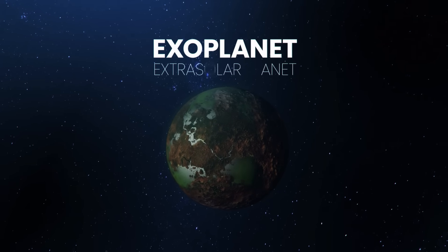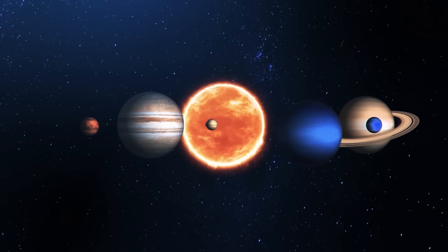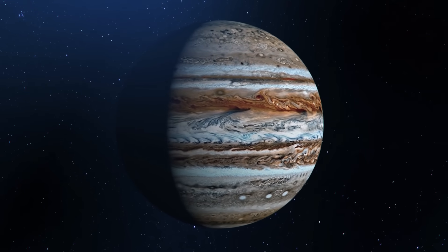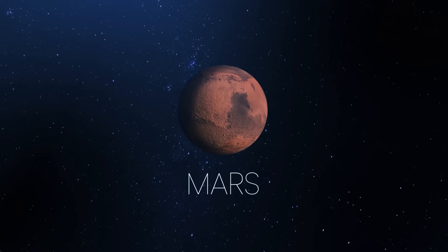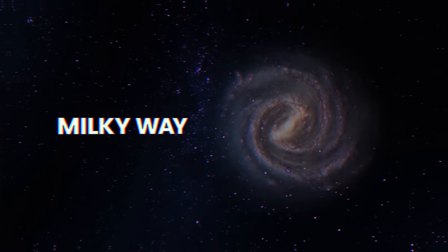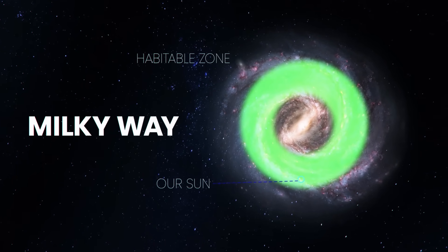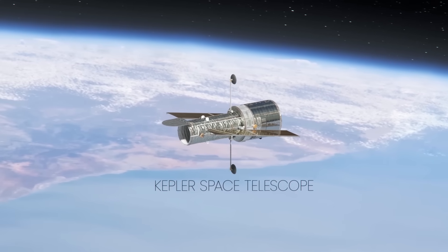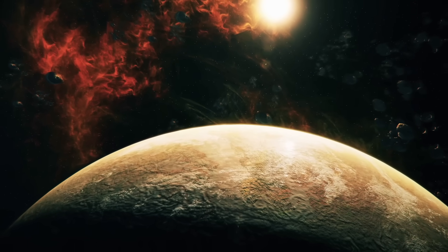An exoplanet, or extrasolar planet, is any world that orbits a star outside of our solar system. Exoplanets can range in size from gas giants larger than Jupiter to small rocky planets like Mars and Earth. Most of the planets that have been discovered lie in a small region of the Milky Way galaxy, and we know from observations made by NASA's Kepler Space Telescope mission that there are more planets than there are stars.